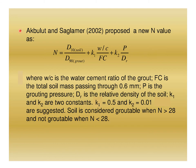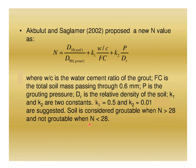As per Akbulut and Saglamar, a new N value was proposed using the formula where w/c is the water-cement ratio of grout, fc is the total soil mass passing through 0.6 mm, p is the grouting pressure, D_r is the relative density of the soil, and k1 and k2 are two constants: k1 = 0.5 and k2 = 0.01. Soil is considered groutable when N is greater than 28 and not groutable when N is less than 28.